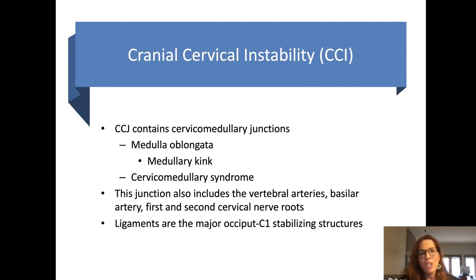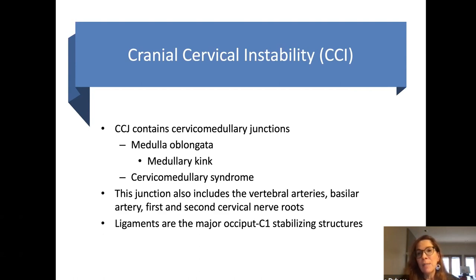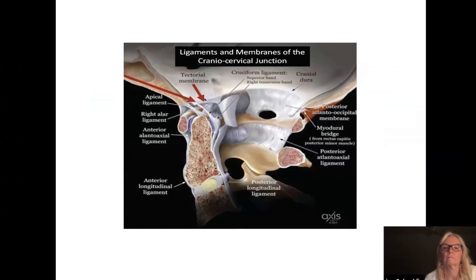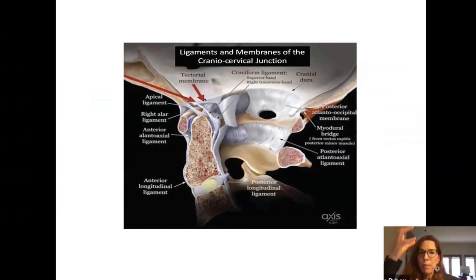Over time with aging, the cranial cervical instability leads to furthering of cervical medullary syndrome and worsening symptoms, ultimately requiring surgical intervention for correction. A picture showing the different ligaments — including those that hold together the cranial cervical joint where the skull meets C1 — illustrates this. There are more ligaments than represented in that picture, but these are the main ones.